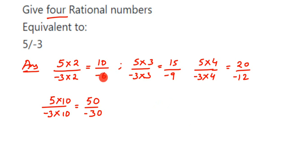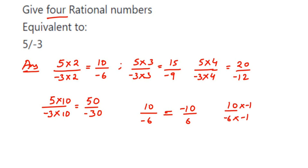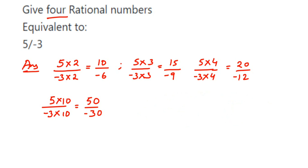One more thing about the negative sign: I have written the negative sign in the denominator. Wherever you write the negative sign — numerator or denominator — the value of that number is negative. So 10 upon minus 6 can also be written as minus 10 upon 6; they are equal. If you multiply 10 upon minus 6 by minus 1 in numerator and denominator, you get minus 10 upon 6. The negative sign simply moves from denominator to numerator.